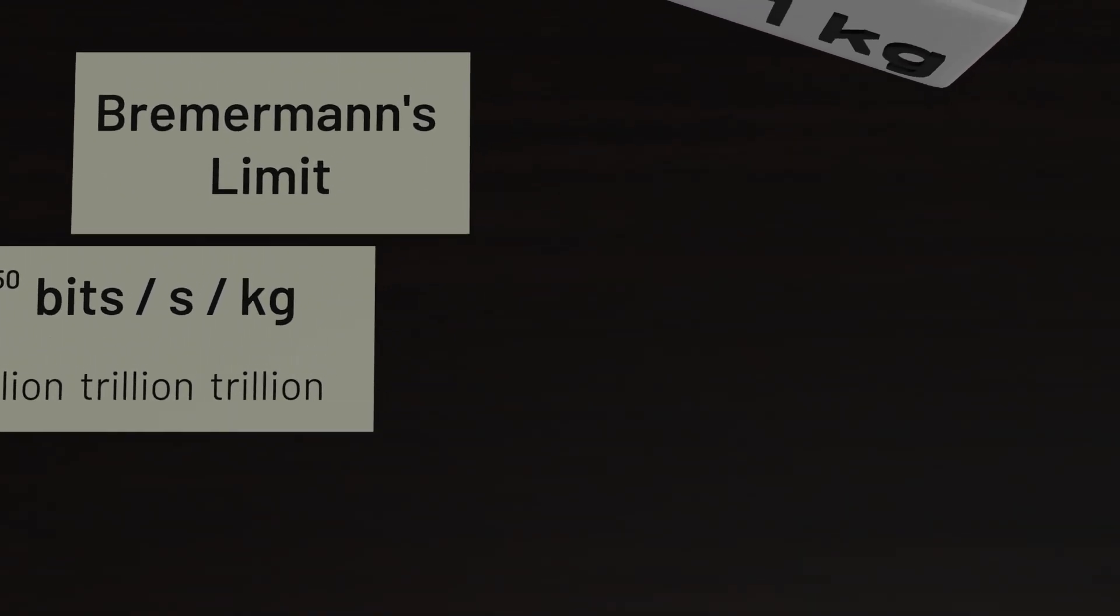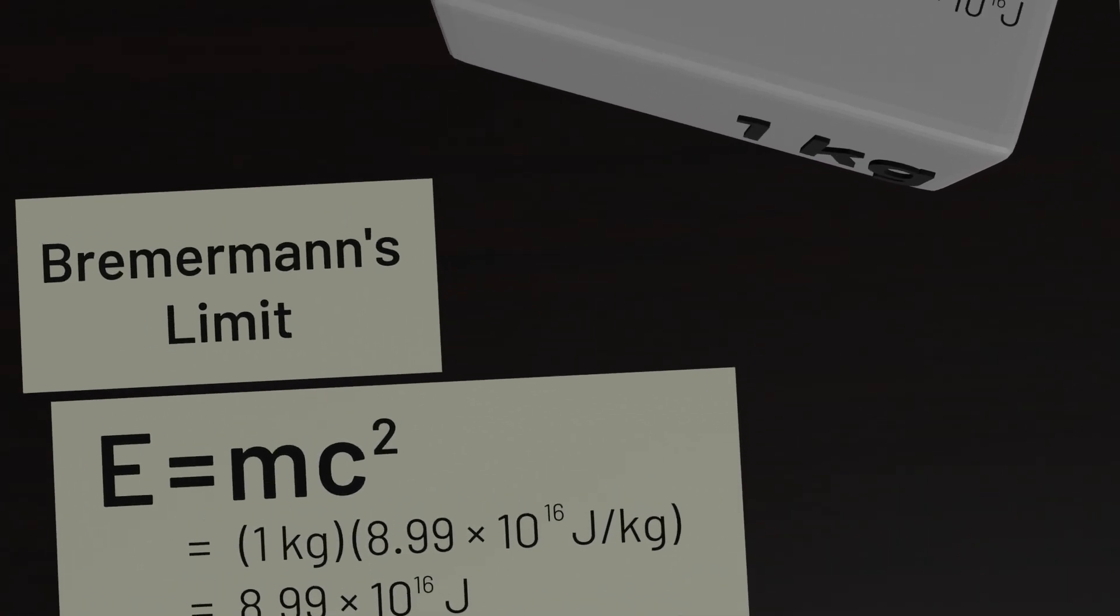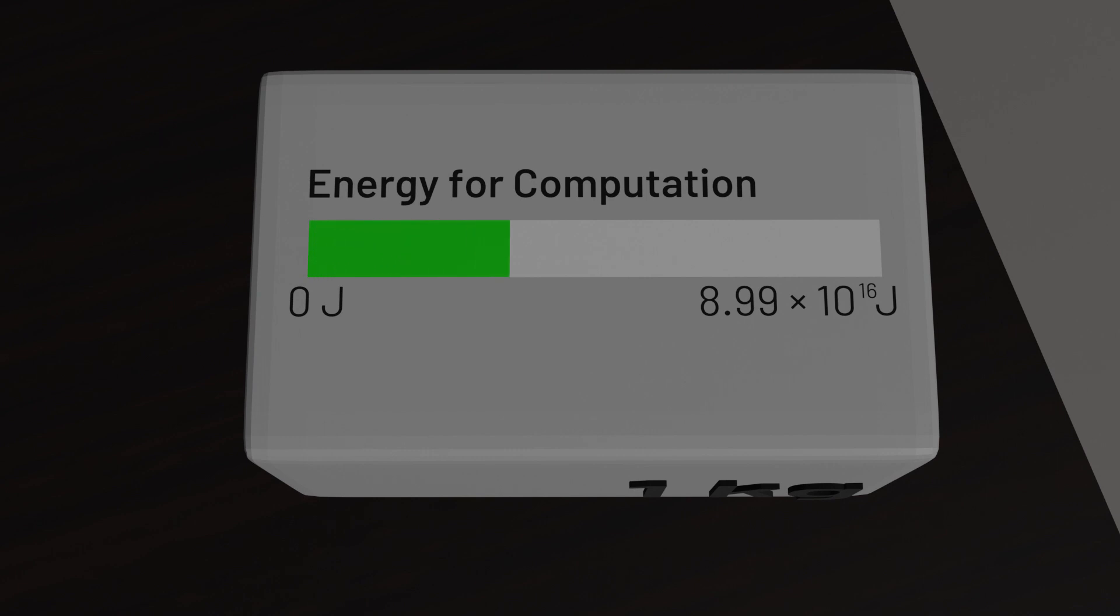How do we know how much energy this computer has? Well, for that we can turn to Einstein's famous mass energy equivalence formula, E equals mc squared. For any given mass of a computer, we can use this formula to compute the equivalent amount of energy this computer has. That number represents the maximum possible amount of energy that can be used for information processing. And in our ideal computer, let's put every last unit of that energy into processing as much information as we can.